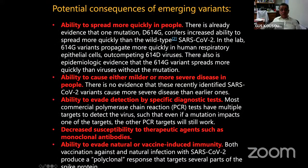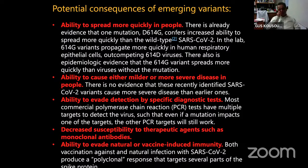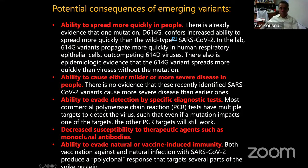Decreased susceptibility to therapeutic agents like monoclonal antibodies is a concern — a single amino acid change could knock out monoclonal antibody therapy such as that used to treat President Trump. And the ability to evade natural or vaccine-induced immunity is where these other open reading frames are very important, because we do not understand the immunopathogenesis of these viruses. Everybody's concentrating on the spike protein as the easier target, but there are many other things we need to know about how this virus controls the immune response and causes pathogenicity.